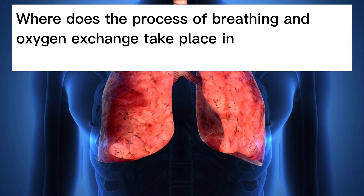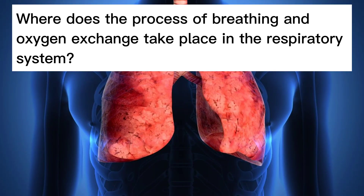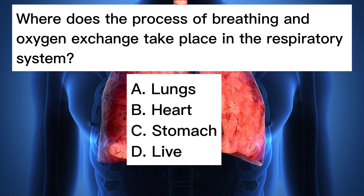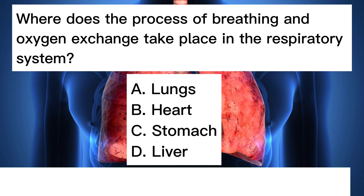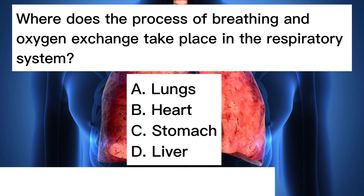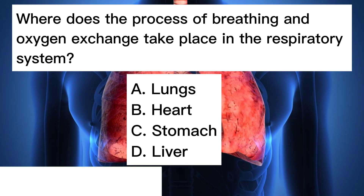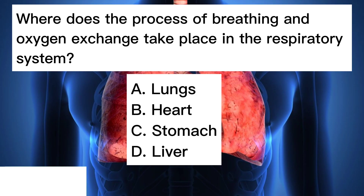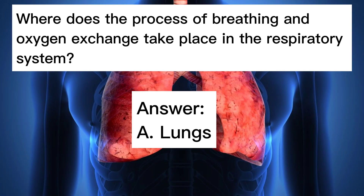Where does the process of breathing and oxygen exchange take place in the respiratory system? A. Lungs. B. Heart. C. Stomach. D. Liver. Answer: A. Lungs.